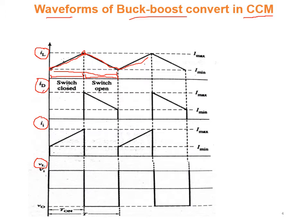The diode current is equal to zero during the first sub-interval because it is reverse biased. During the second sub-interval, the diode current is equal to the inductor current because the diode is now forward biased and the inductor current is passing through the diode. Similarly, the source current is equal to the inductor current when the switch Q is closed, while during the second sub-interval the source current is zero.